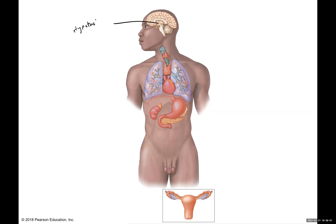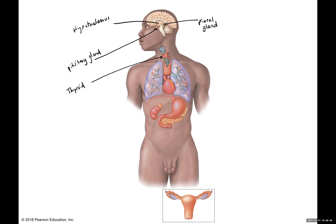Here we have the hypothalamus, we have right below the pituitary gland, and then here we have the pineal gland. Here in the neck, we have the thyroid. And if you look closely, we can actually see the four parathyroid glands, which are positioned on the posterior side of the thyroid.